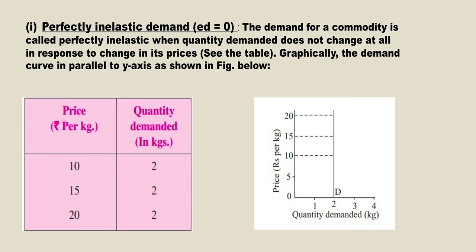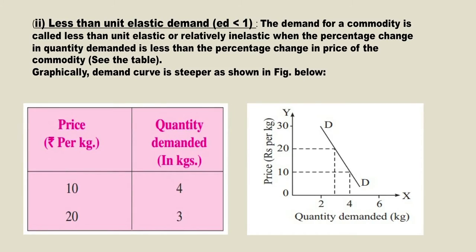The second case is price elasticity of demand less than 1. Here, the quantity demanded of a commodity increases but less than proportionate to the decrease in price. The price of the commodity decreases but quantity demanded increases, but not to that extent. From the table, the price increases from 10 to 20 but the quantity demanded decreases only from 4 to 3.